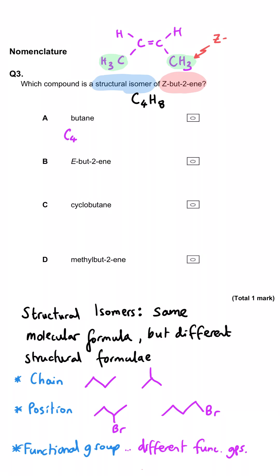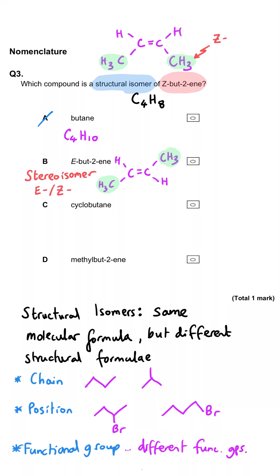Butane is 'but-' so 4 carbons, but it's an alkane so it's going to have 10 hydrogens — A is wrong because it doesn't have the same molecular formula. B is E-but-2-ene: that is similar to Z-but-2-ene and it is an isomer, but it is a stereoisomer — that's where you've got the same molecular and structural formula but a different spatial arrangement. E and Z is EZ isomerism, so B is also wrong.